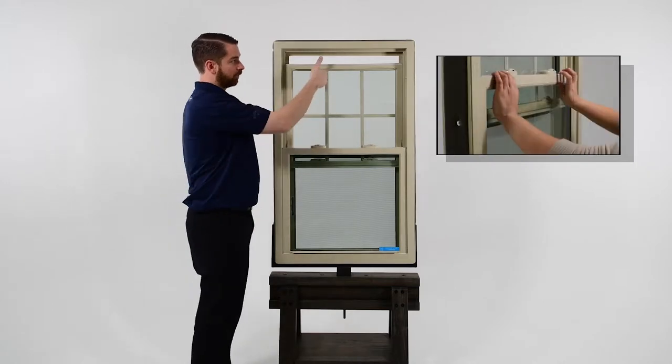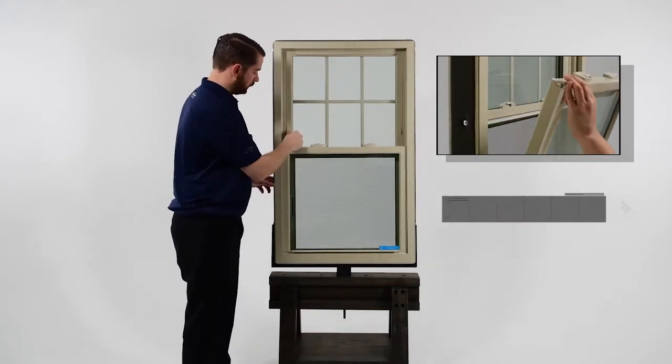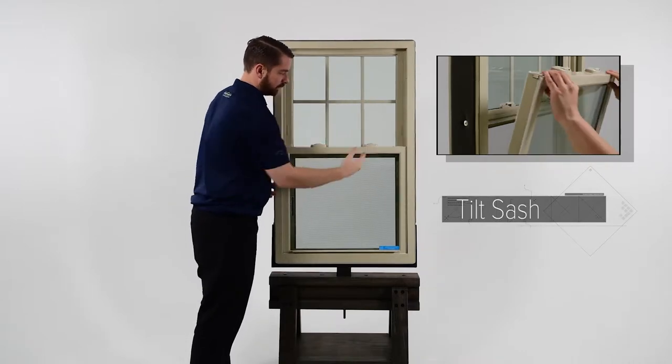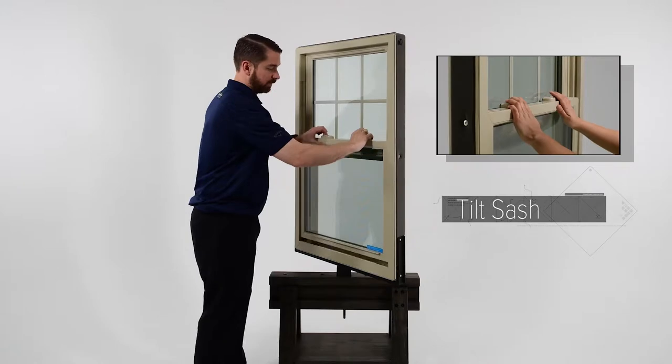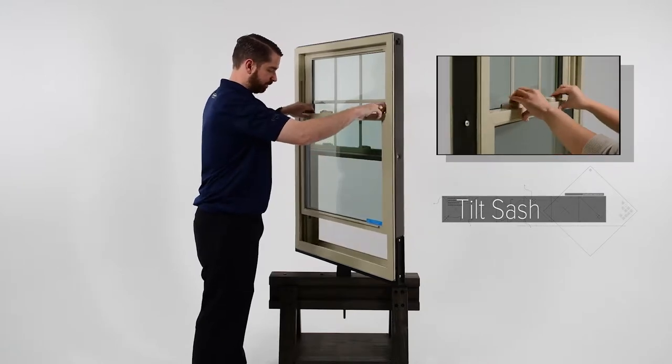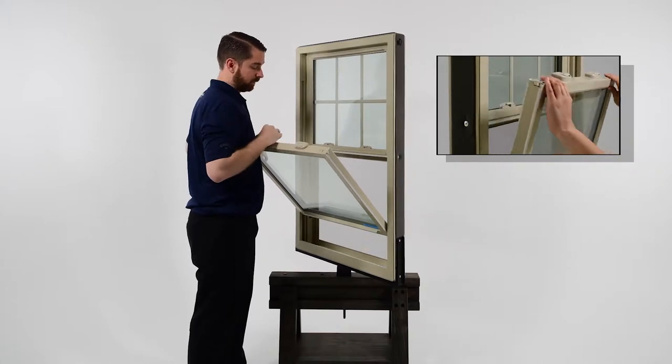After that we'll cover the tilt sash feature. Just like the single hung windows, this window does have a tilt sash feature. You can raise the bottom sash and tilt it in for cleaning the exterior surface of the glass inside of your home.